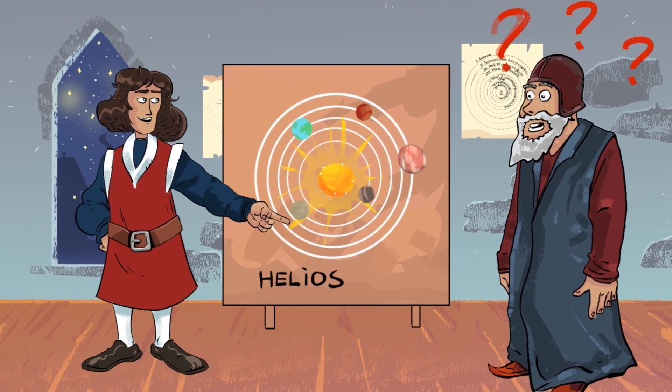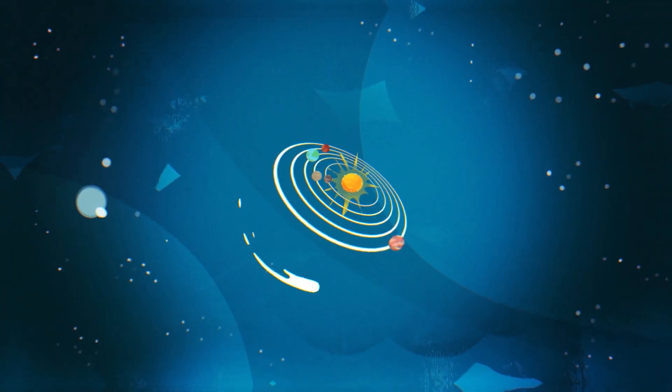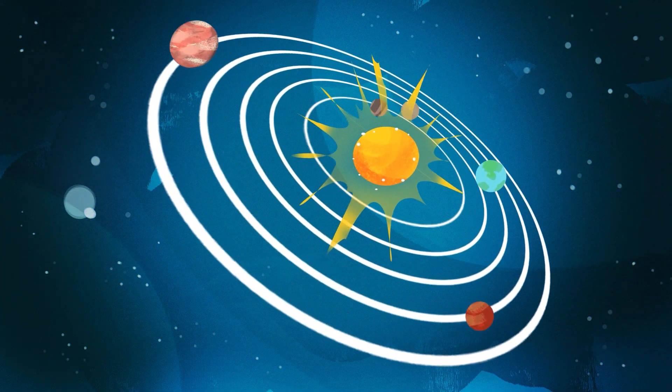Copernicus proposed his theory of heliocentrism. Helios means the Sun. He discovered that the Sun is in the center of the solar system, and all the planets, including Earth, are moving around it.